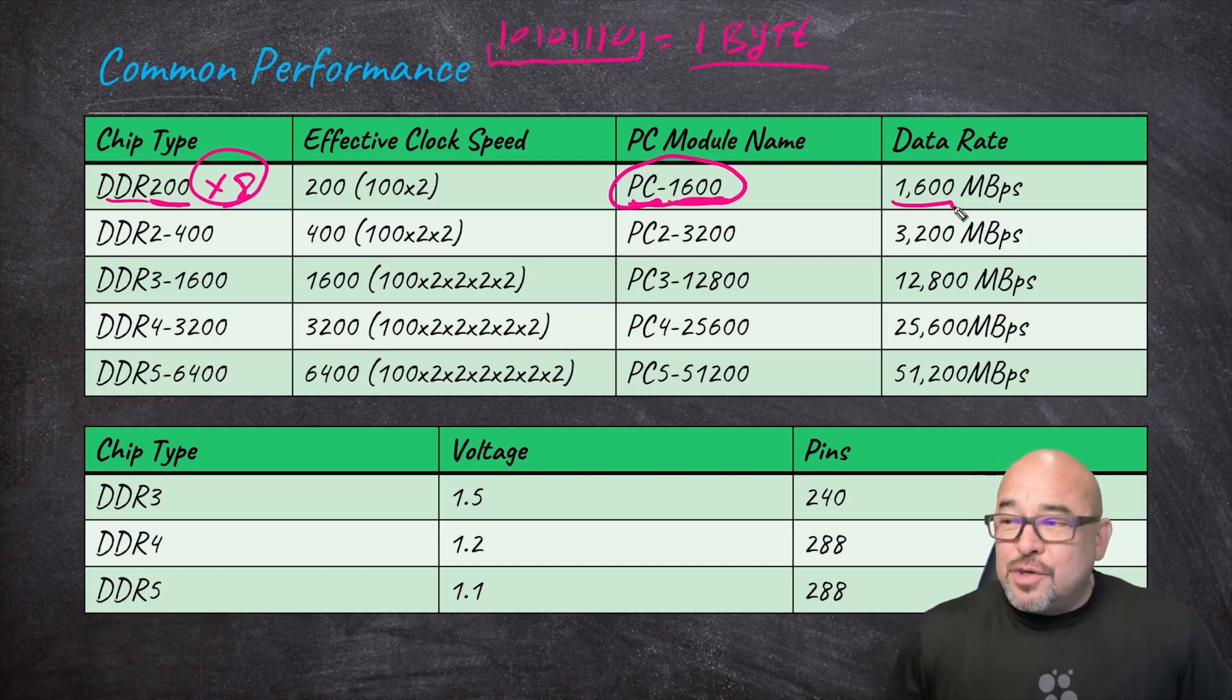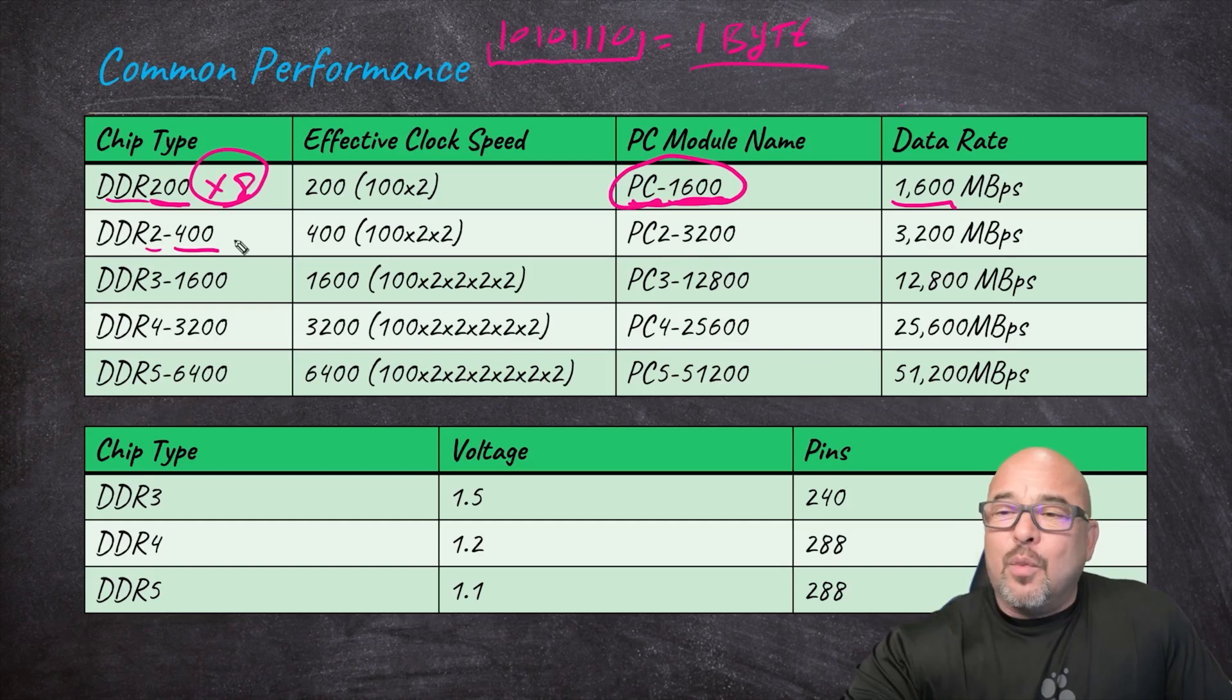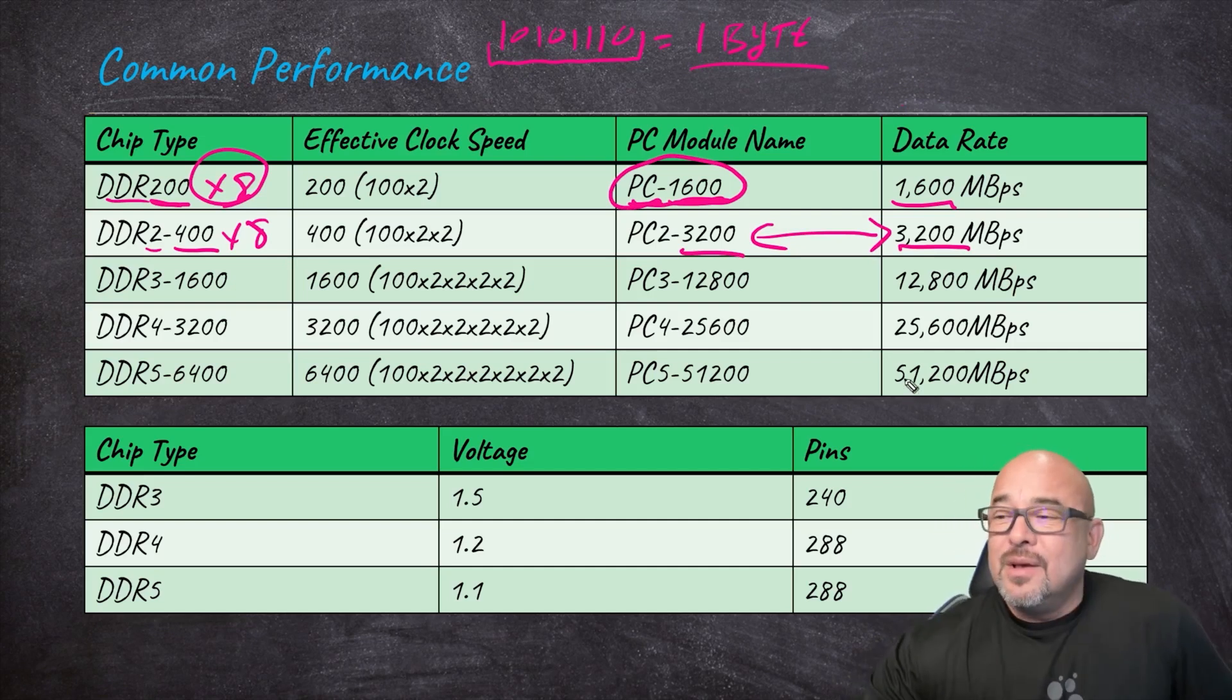So a DDR200 is capable of transmitting 1600 megabytes, not megabits by the way, megabits would be in network traffic for example, megabytes per second. Here we have DDR2 and that is capable of 400 clock speed, 400 times 8 is 32, so that would give us a PC2 module name, would be capable of 3200 megabytes per second. Again, these are the same. Then you can see we go further down and further down until finally at this time of this recording, one of the fastest ones you can get would be 51,200 megabytes per second. Wow, that's an amazing throughput there.